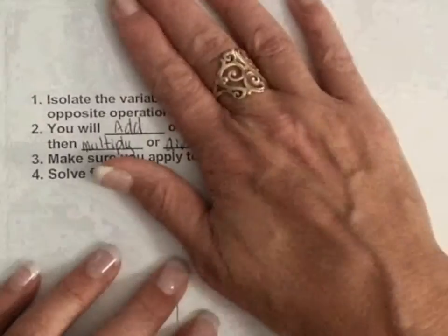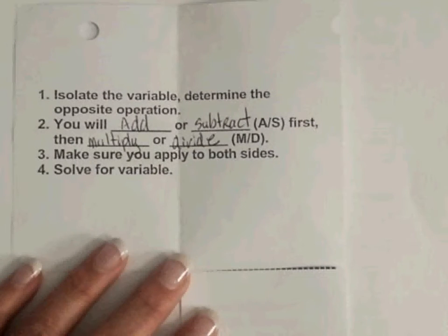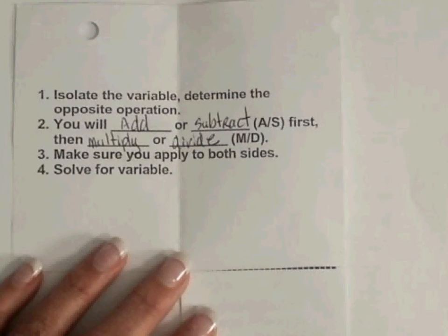You want to isolate the variable and determine the opposite operation. You will add or subtract first, then multiply or divide. Make sure you apply to both sides. In order to keep your equation even, equal, if you do it to one side, you must do it to the other side of the equation. Then you solve for the variable.